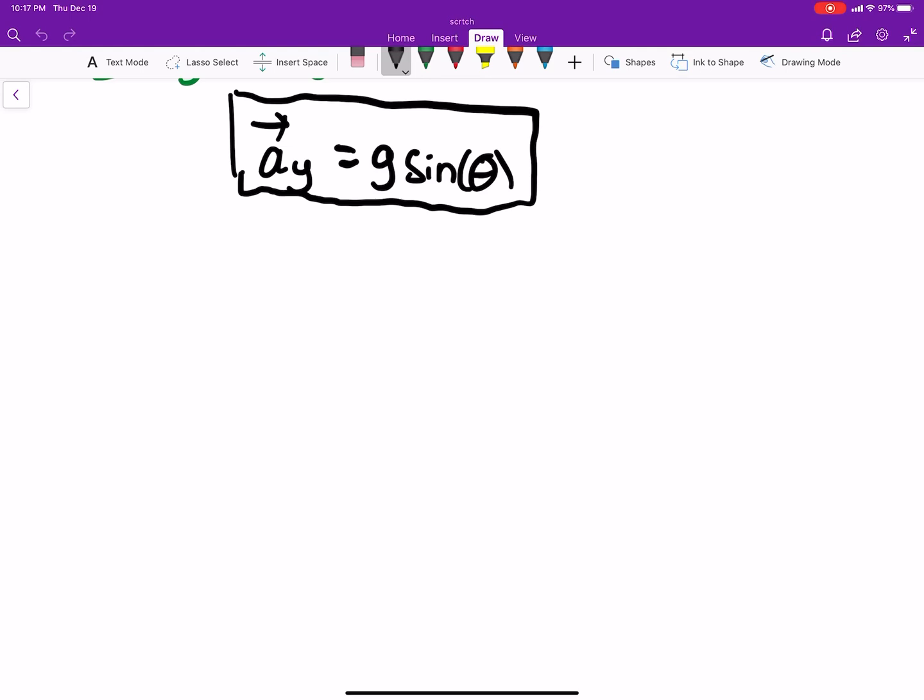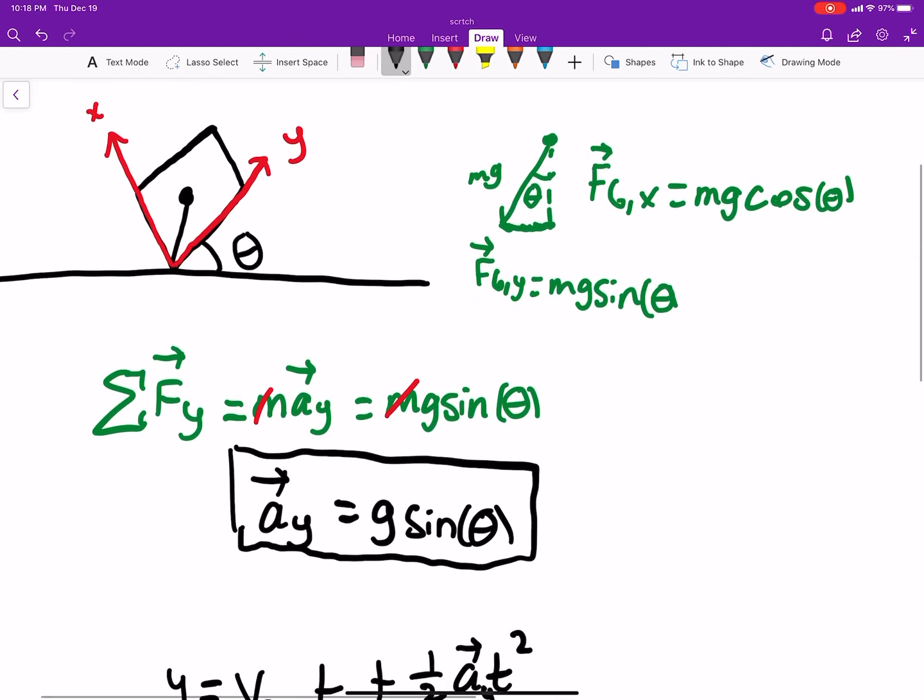This acceleration is also in the y direction. And now we know acceleration, so we can say y is equal to v naught y times t. Should be denoted that this is going to be a negative g.